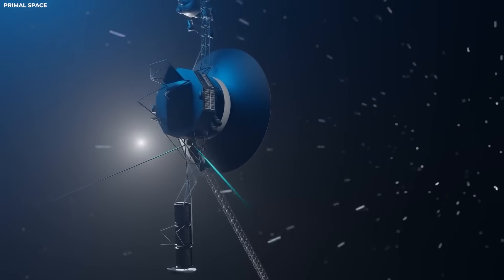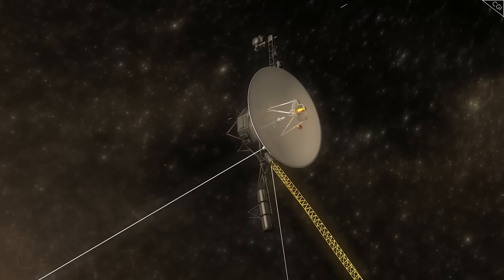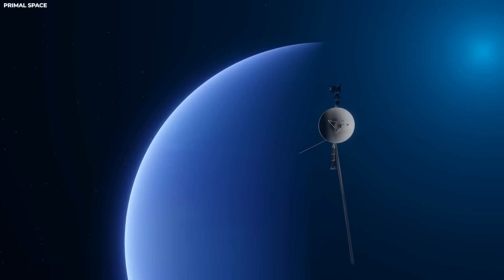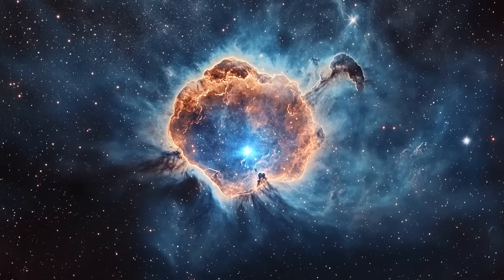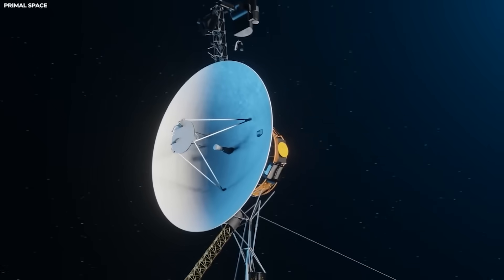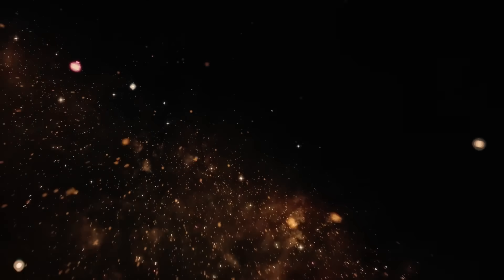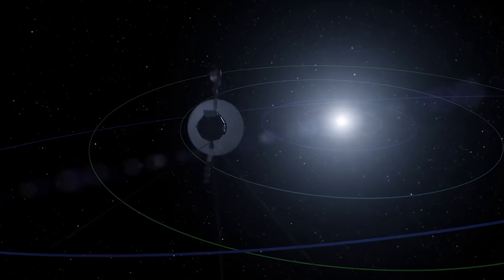That was when the deep space network captured something no one could explain. A second signal. Not from Voyager 1, not from Earth, but from somewhere between them. The transmission matched the probe's original frequency, but was stronger, far too powerful to be reflected light or radio bounce. For 19 minutes, it mirrored every Voyager transmission in real time, duplicating its telemetry down to the last bit. It was as though there were two Voyagers communicating, one human, one reflected, separated by billions of kilometers, each echoing the other in perfect synchrony.